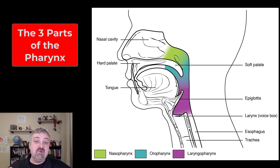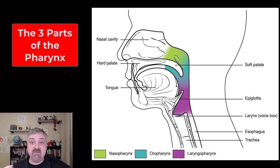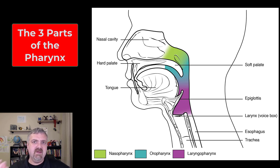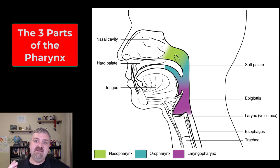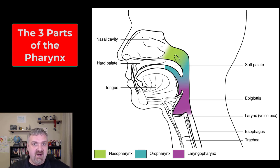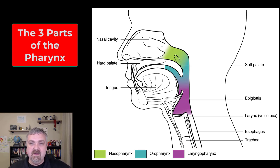Hey everybody, Dr. O here. In this short video I just want to highlight the three parts of the pharynx. The reason I'm doing so is because they can be kind of crowded out in some of the other images we're talking about, and it's important that you know them because they're involved in two major systems: the respiratory system and the digestive system.